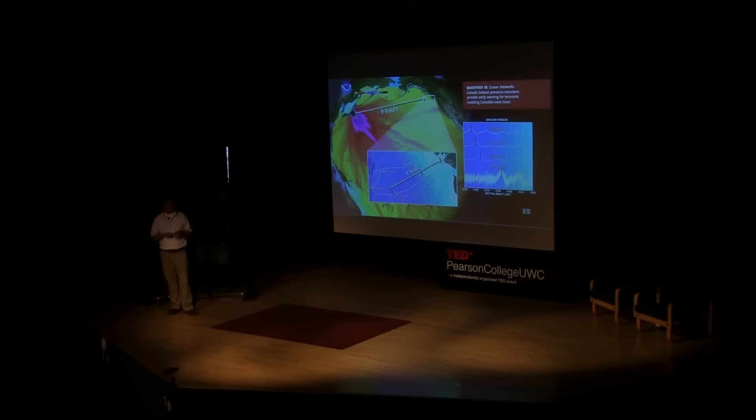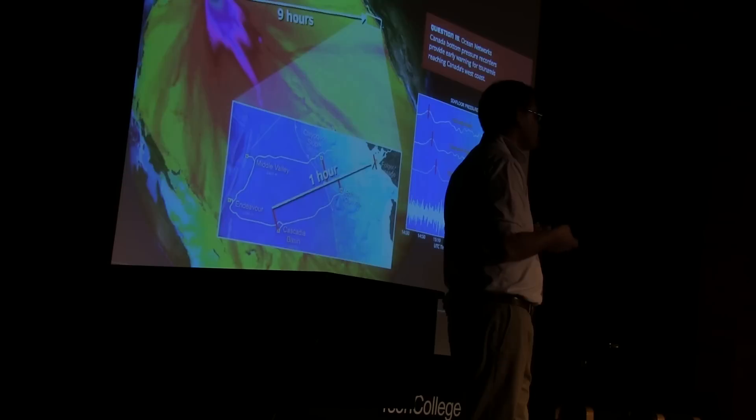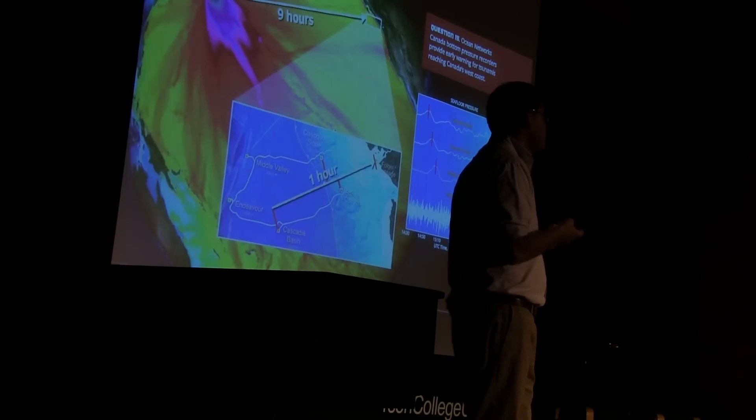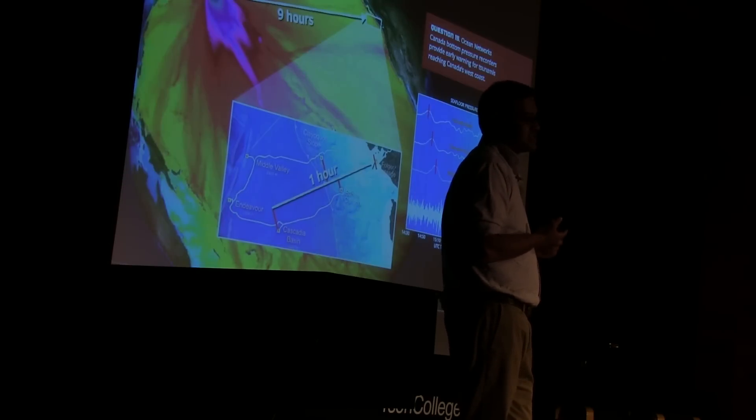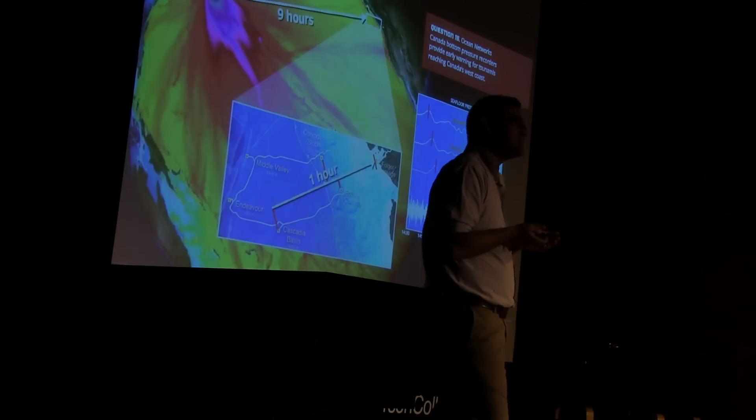Tsunamis tend to propagate at a slower rate, within an hour or so, and we have bottom sea pressure sensors that allow us to get a sense of the magnitude of the tsunami and the direction it's going to take. So we can predict, within an hour or so, the path and inform people living in the path of the tsunami that perhaps they should evacuate. And again, hopefully mitigate any major loss of life.